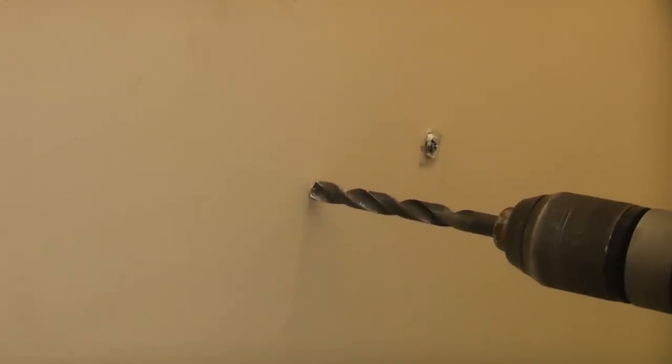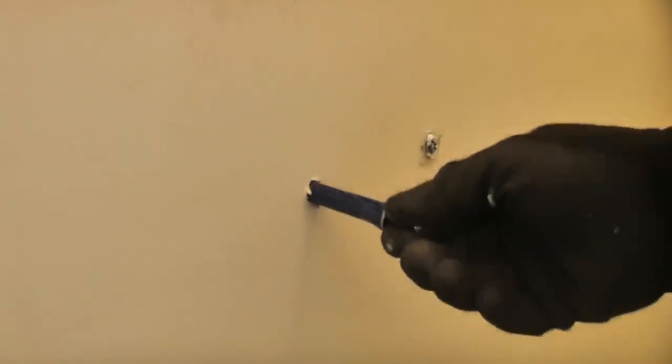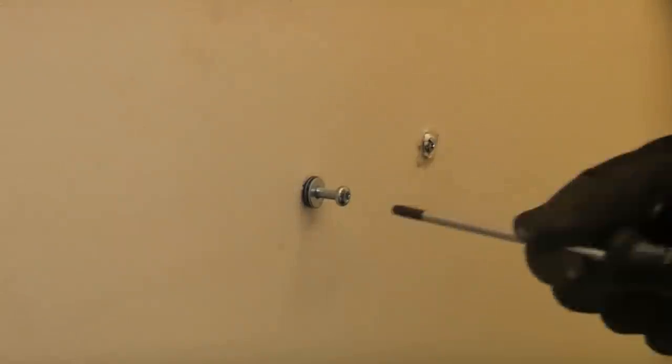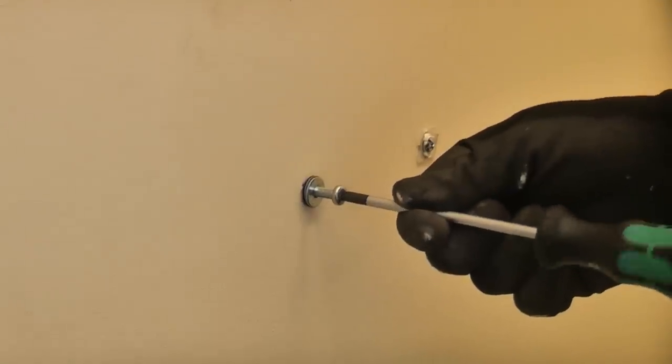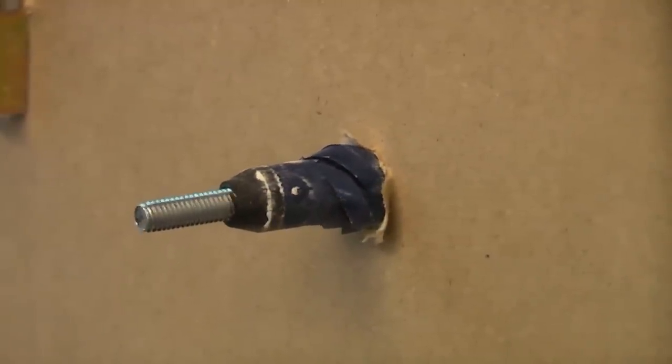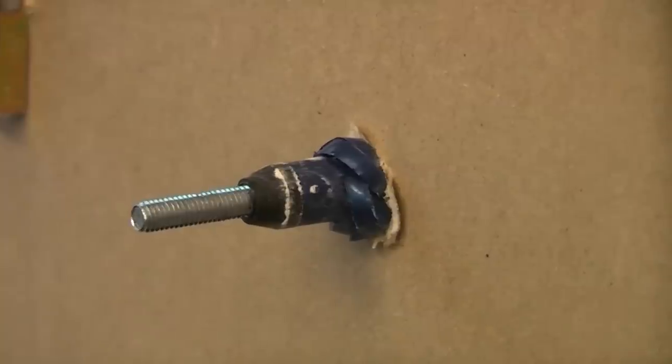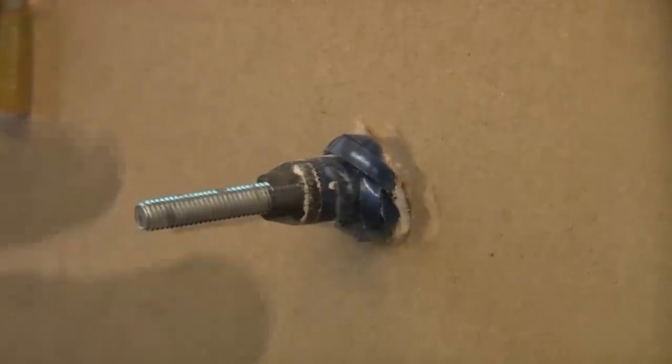To use the rosette fixing, you simply need to make the correct size hole, which in this case is 10mm. Then push the fixing into the plasterboard. You do actually need a Torx driver for these, and that is a TX25. So we'll now tighten that up. You can see that has actually given us a very strong fixing.